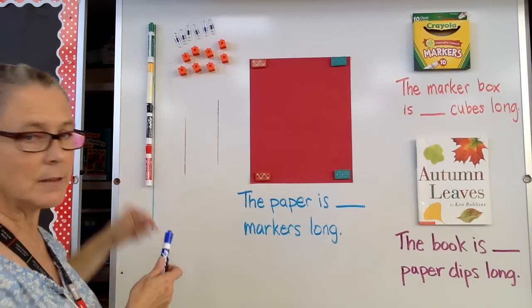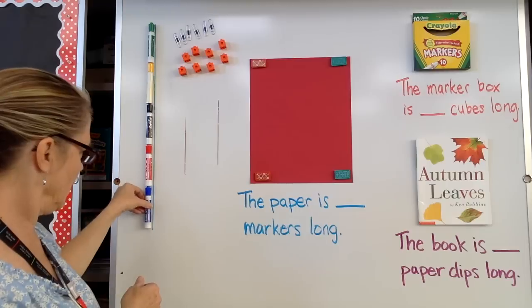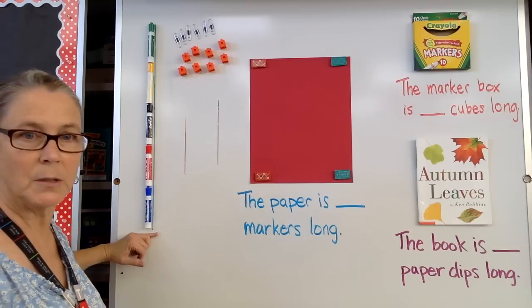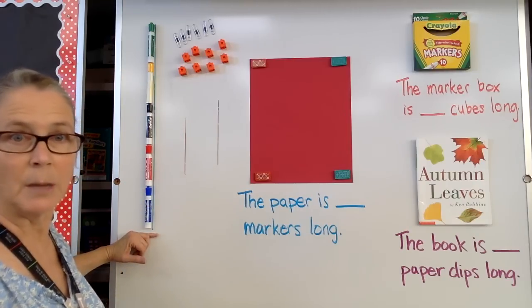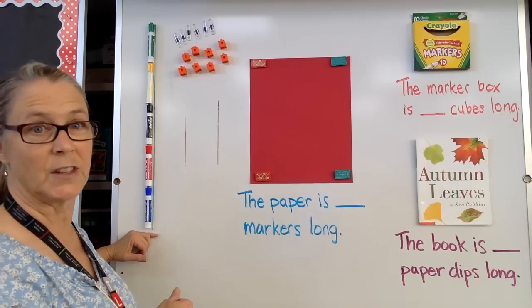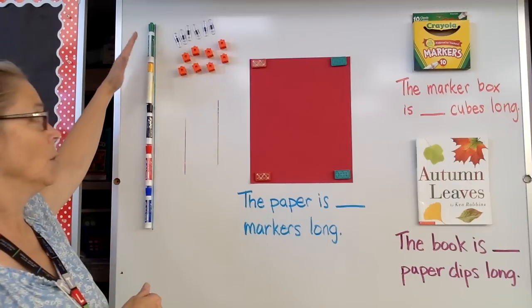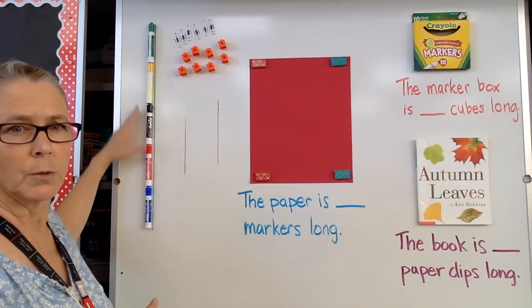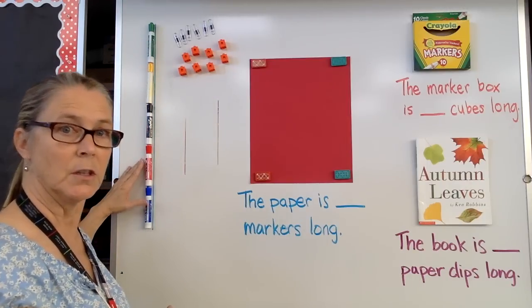No gaps. No space. Nothing can go in there. They're exactly touching so we can get an accurate measurement of how long this line is. This comes all the way to the bottom of the line. So let's see how many markers we have — the length of this line is one, two, three, four, five markers long.